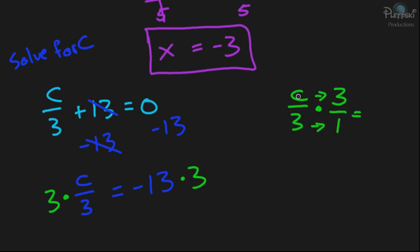So, we get c times 3, which is 3c, and then 3 times 1, which is just 3. And then we can cancel out the 3s there. So, we cancel out the 3s, and we're left with c on one side. And then negative 13 times 3 is going to be negative 39. And that's our answer.